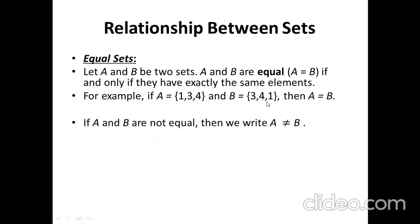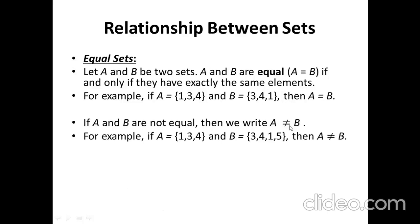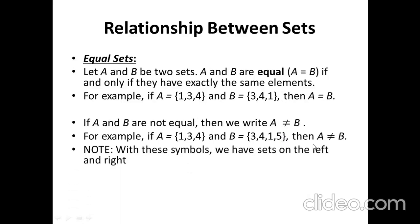If A and B are not equal, we write the inequality symbol. For example, if A is {1, 3, 4} and B is {3, 4, 1, 5}, now 5 is an extra element in B, so A is not equal to B. With these symbols, we have sets on the left and right. The symbols mean that if our two sets are equal or unequal, we write the sets on the left and right of the symbol to represent their relationship.